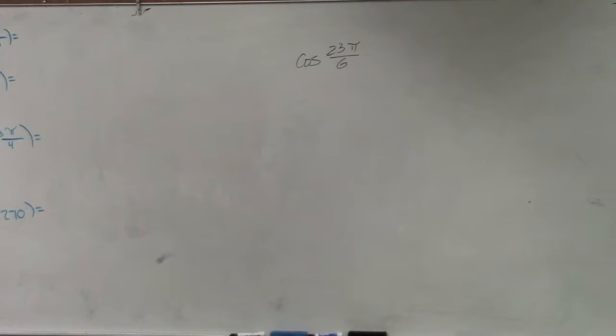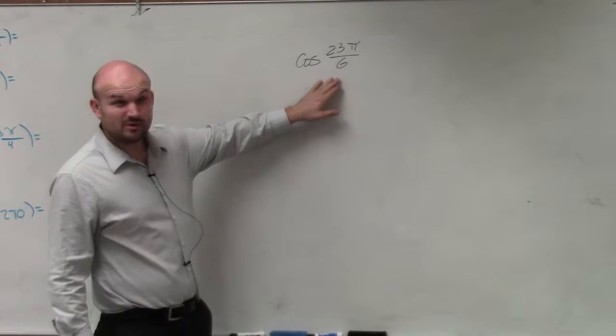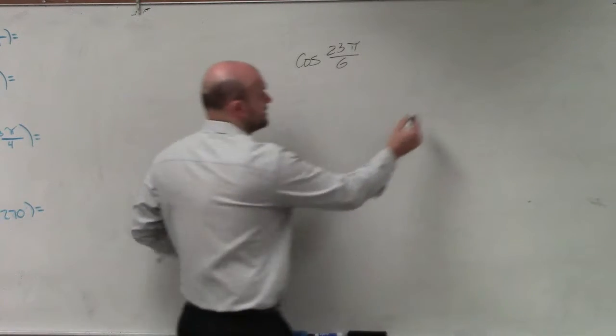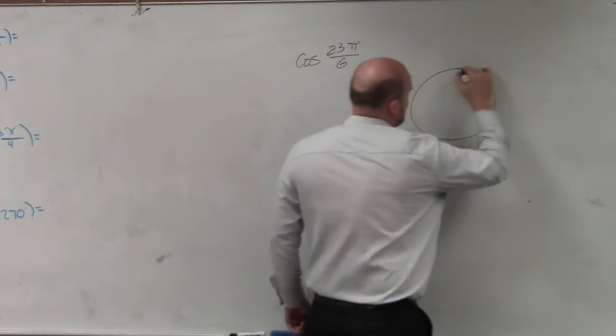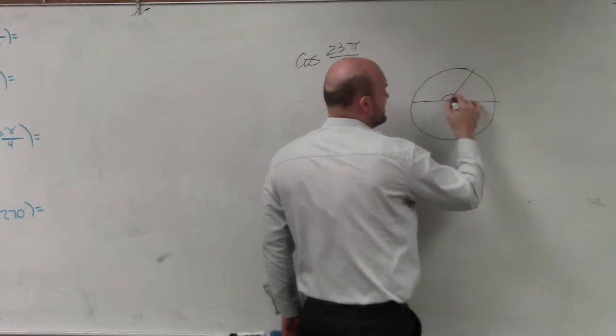So an example like this, basically, we know that this is greater than 2π. 23π over 6 is some big angle. Because if we were going to break this up, and we know halfway around is π, well, if we were going to break this up into 6...